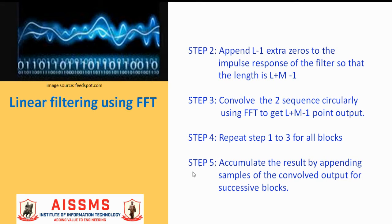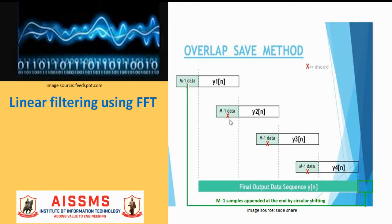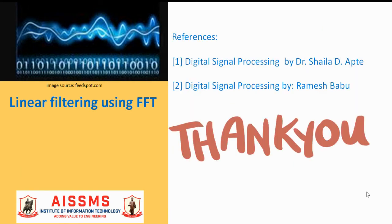Step 5 is to accumulate the result by appending samples of the convolved output for successive blocks. Here in this algorithm, we are discarding the first M minus 1 samples from the result of every block. But we append the first M minus 1 samples of the first block at the end of the accumulated result by circularly shifting. We overlap the input data samples and save the rest of the non-overlapping result samples. Hence, the algorithm is called overlap and save algorithm. That's all for now.